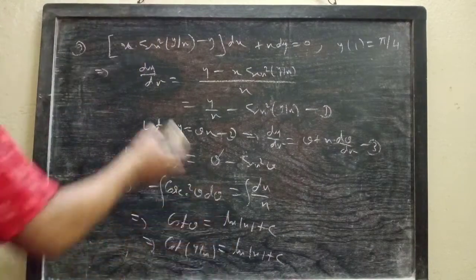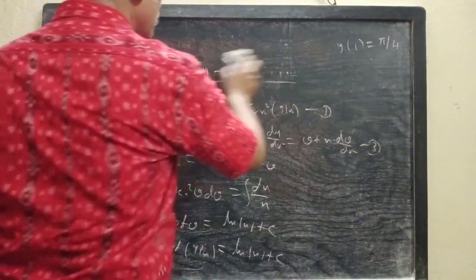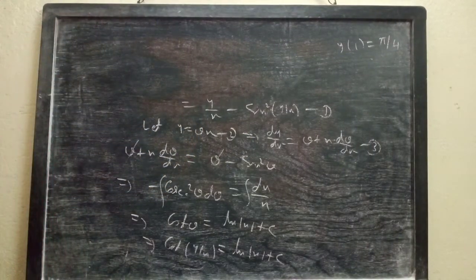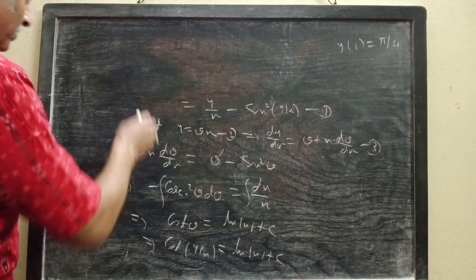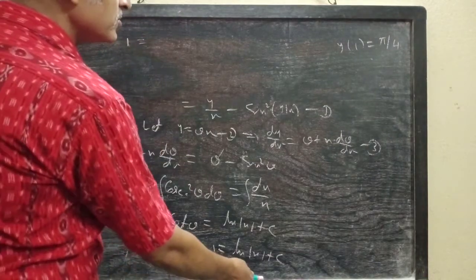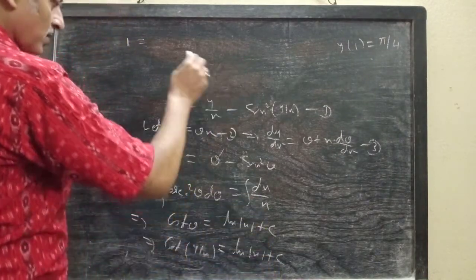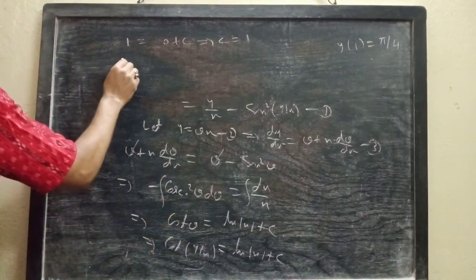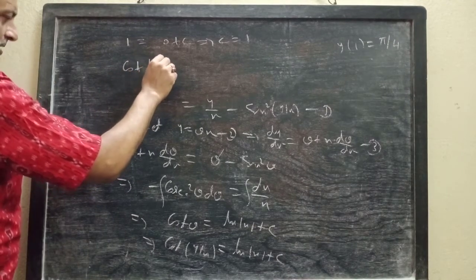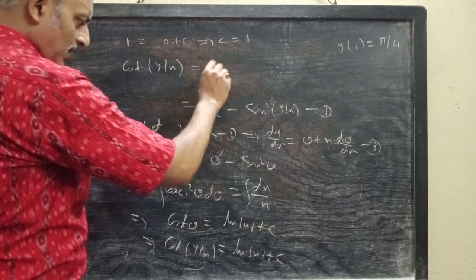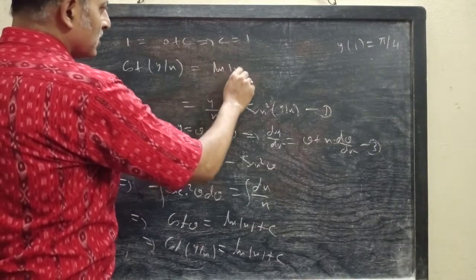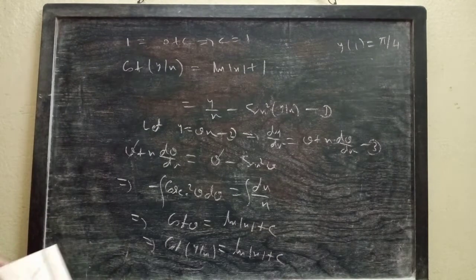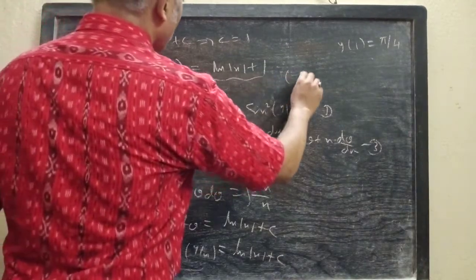Now applying the initial condition: when x equals 1 then y equals π/4. This becomes cot(π/4) equals 1, and ln(1) is 0, plus c. So finally we get c equals 1. Hence the particular solution of the given differential equation satisfying the given initial condition is cot(y/x) equals ln|x| plus 1.